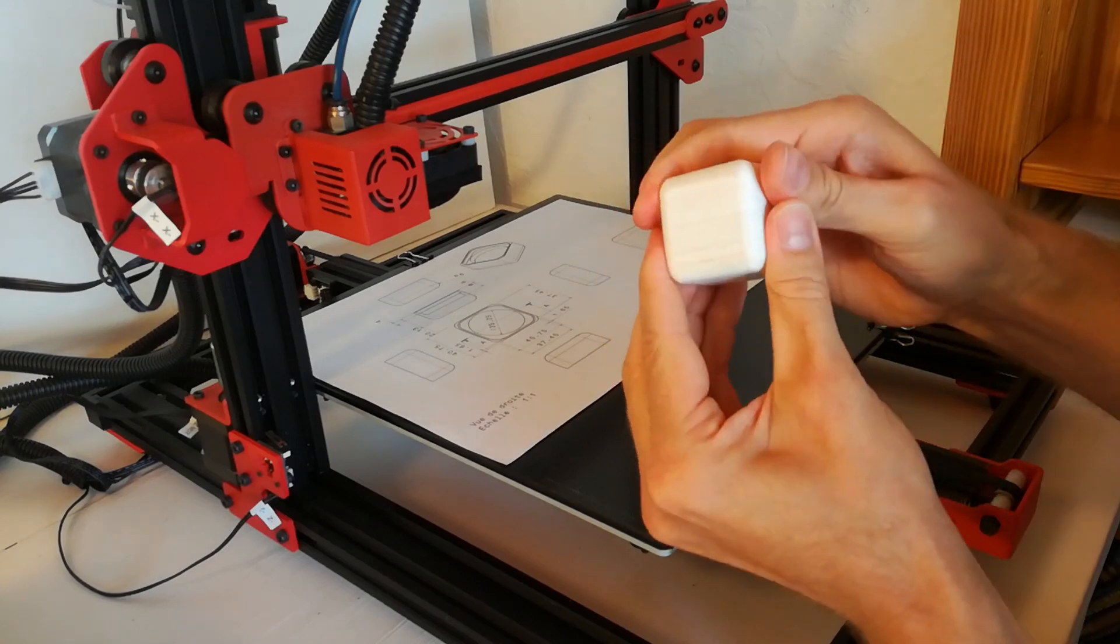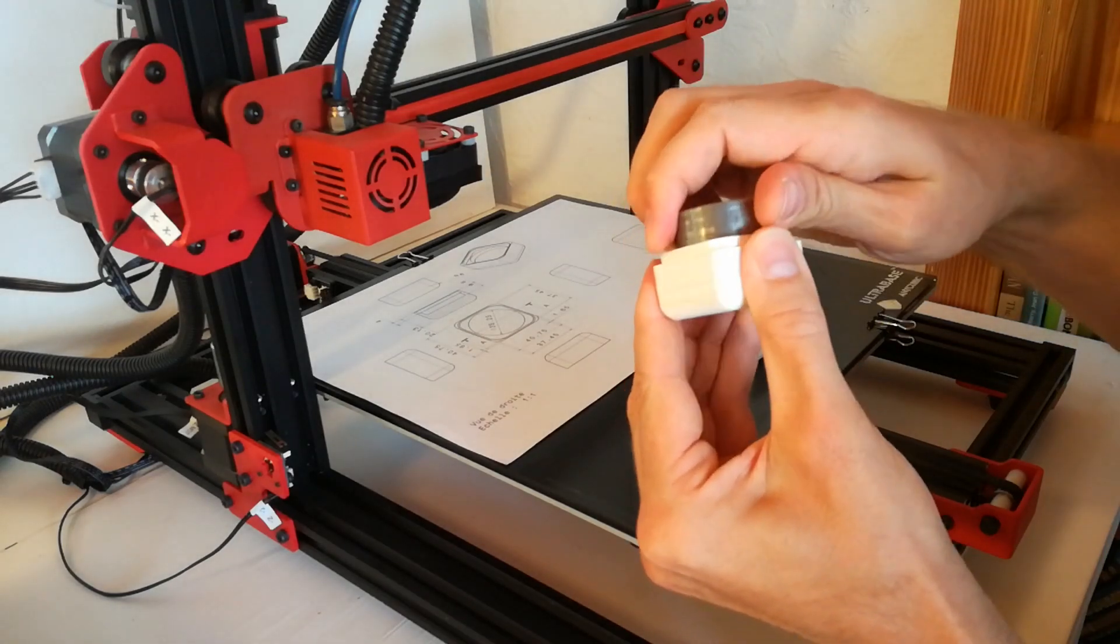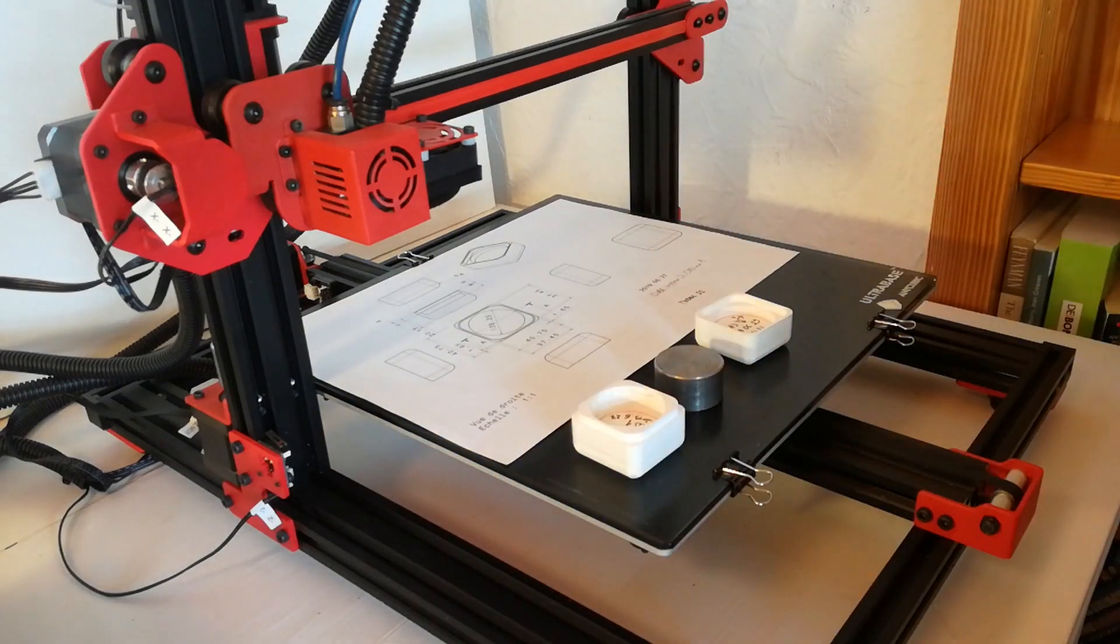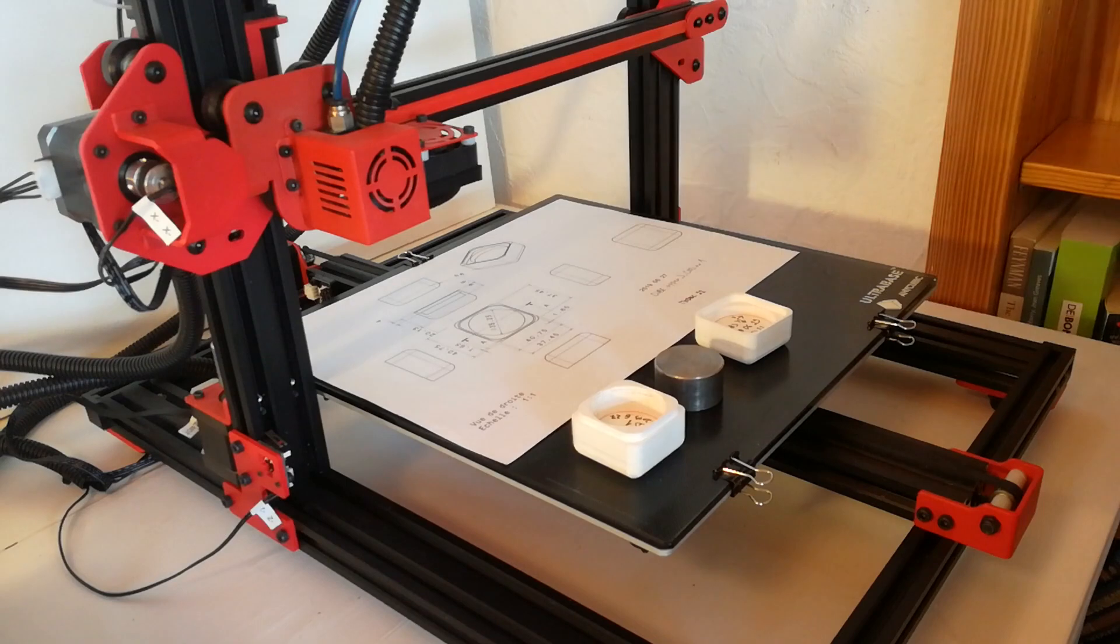So if you manage to 3D print your part with suitable tolerances on one printer, this may require a bit of testing. It may not work on another printer. This is however understandable; it's simply different hardware.